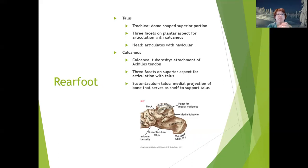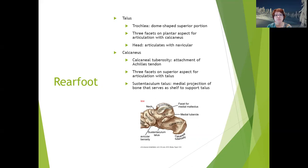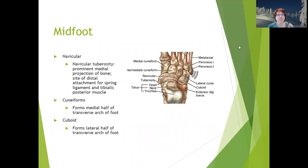On the calcaneus, the calcaneal tuberosity is the attachment of the Achilles tendon. The three facets on the superior aspect of the calcaneus articulate with the talus at the subtalar joint. The sustentaculum tali is a medial projection of bone that serves as a shelf to support the talus and also as a pulley for a muscle tendon. The sustentaculum tali is palpable, and we'll practice doing so in lab.